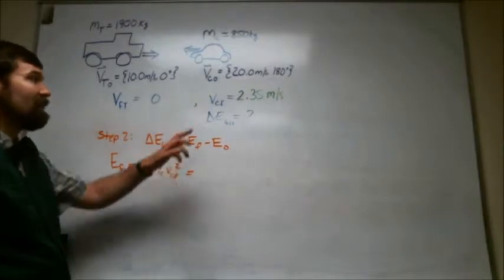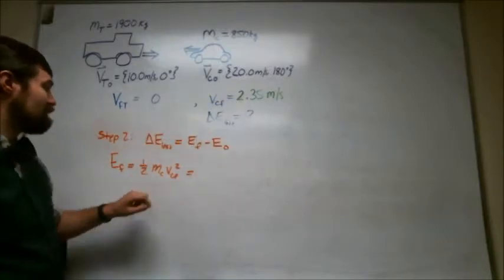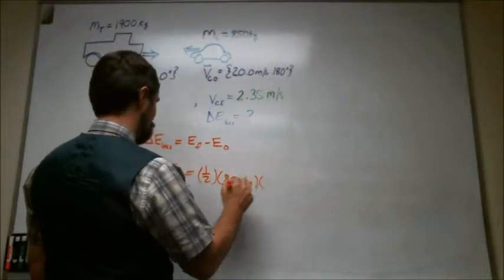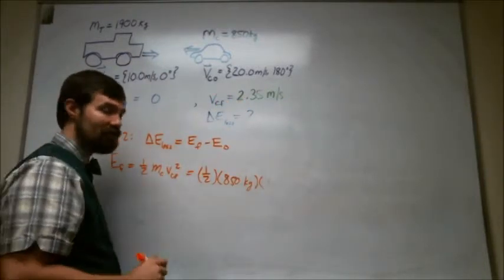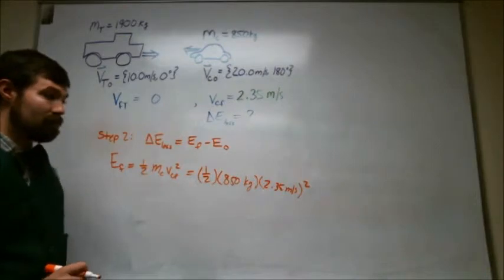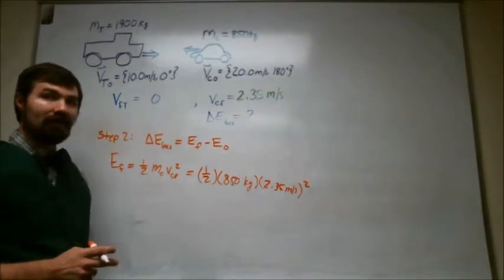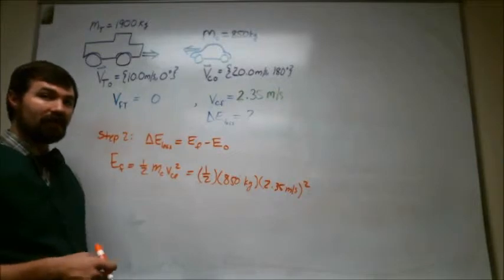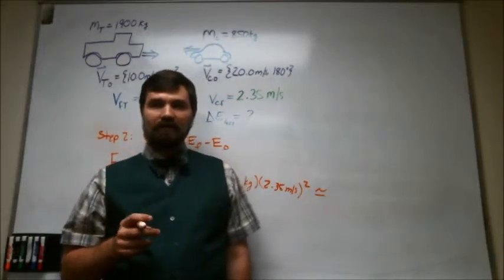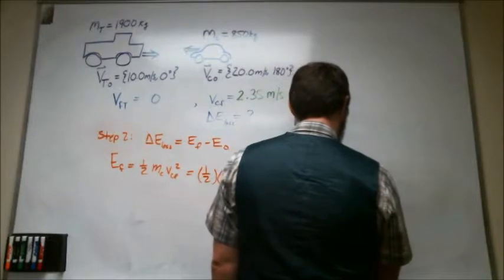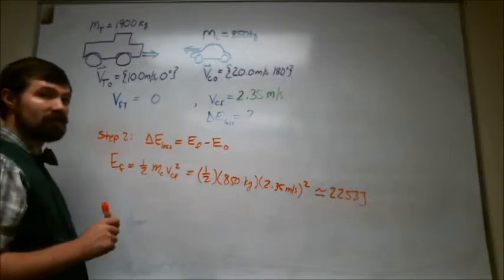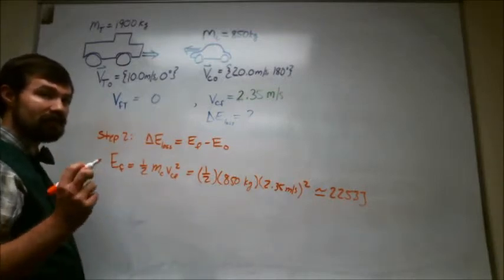Where E final is one half m car v car final squared. So we now have a v final to plug into this thing. So this is going to really be one half times 850 kilograms times 2.35 meters per second times another 2.35 meters per second. And so I calculate that the final energy of this thing is approximately 2,253 joules.